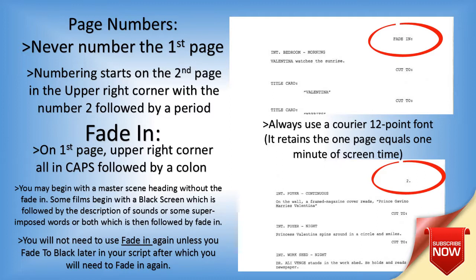On the first page, you never number the first page. Numbering starts on the second page in the upper right corner with the number two followed by a period. So on the first page no numbers — start with the second page with 2 period, and then the next page is 3 period, 4 period, 5, and so on.